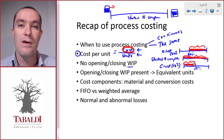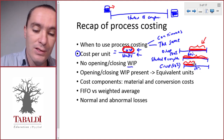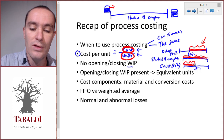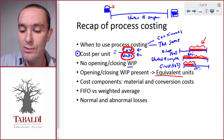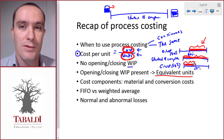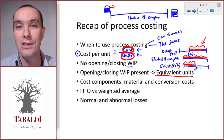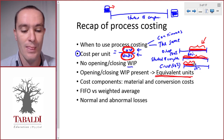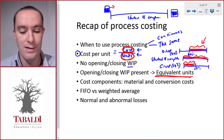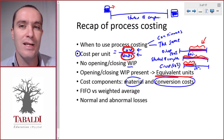When we calculate cost per unit, we can only include the units or the work that we've done in the current period. That's why we need to calculate what are called equivalent units. A big part of process costing — and a lot of the marks associated with a process costing question — goes into calculating the equivalent units.